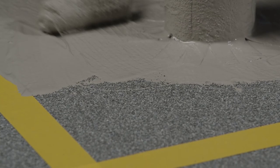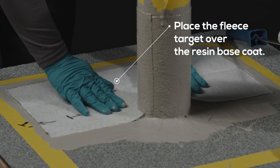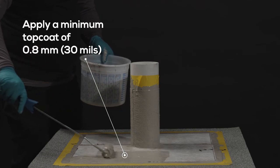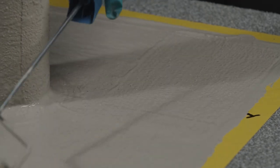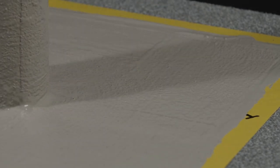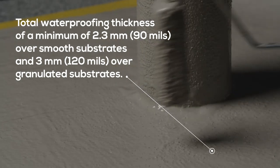Coverage rates will vary based on the substrate profile. Place the fleece skirt over the resin base coat and apply a minimum top coat of 0.8 mm or 30 ml of PMMA flashing resin over the target using care to fully saturate the fleece. The PMMA flashing resin system provides a total waterproofing thickness of a minimum of 2.3 mm or 90 ml over smooth substrates and 3 mm or 120 ml over granulated substrates.